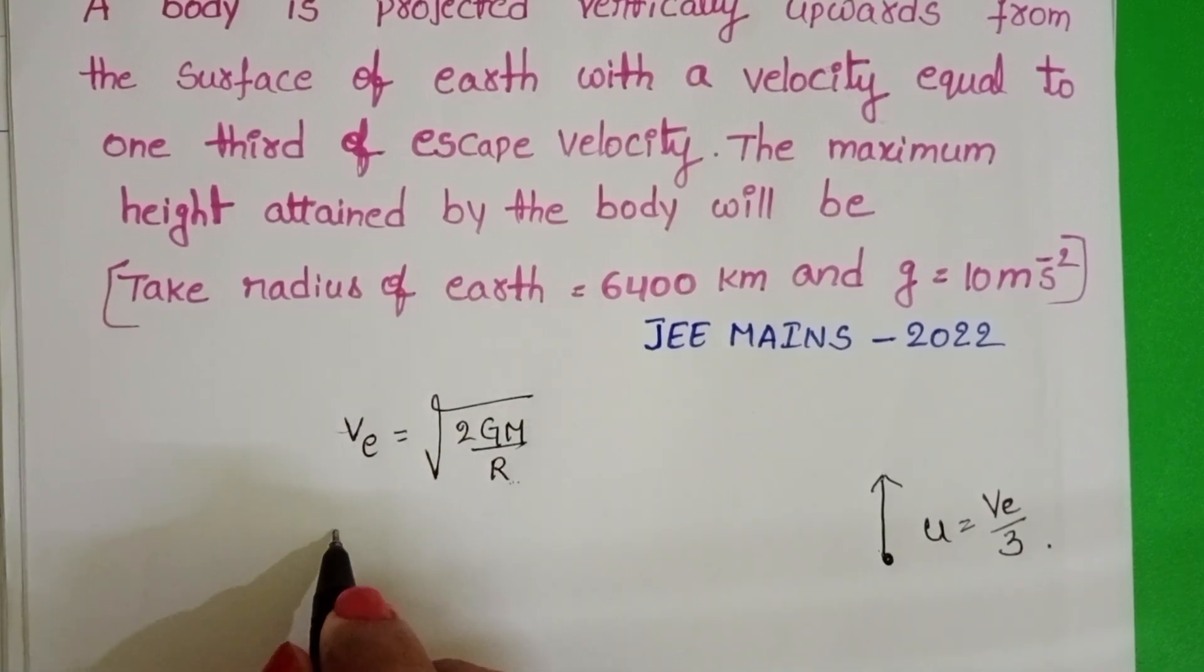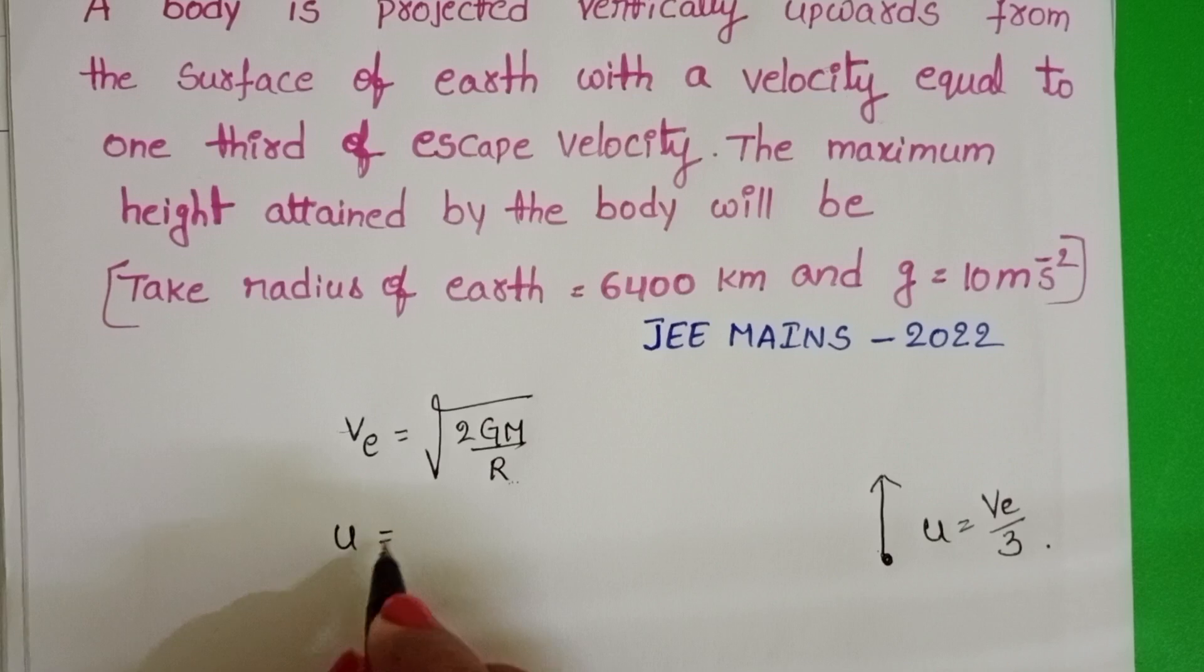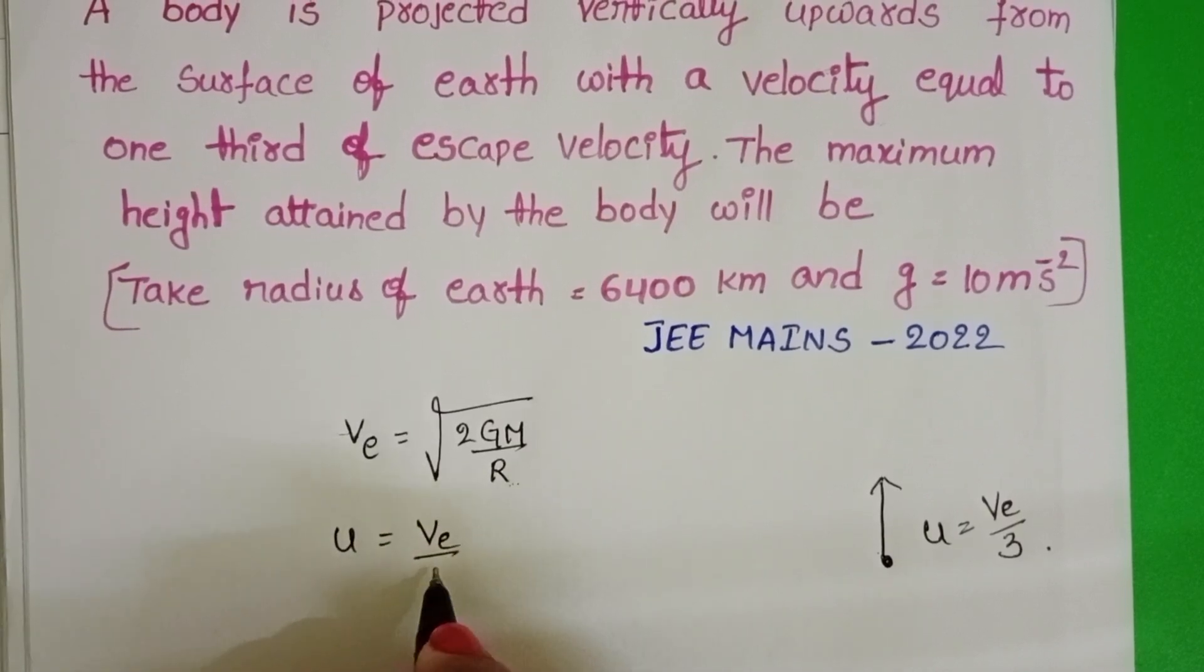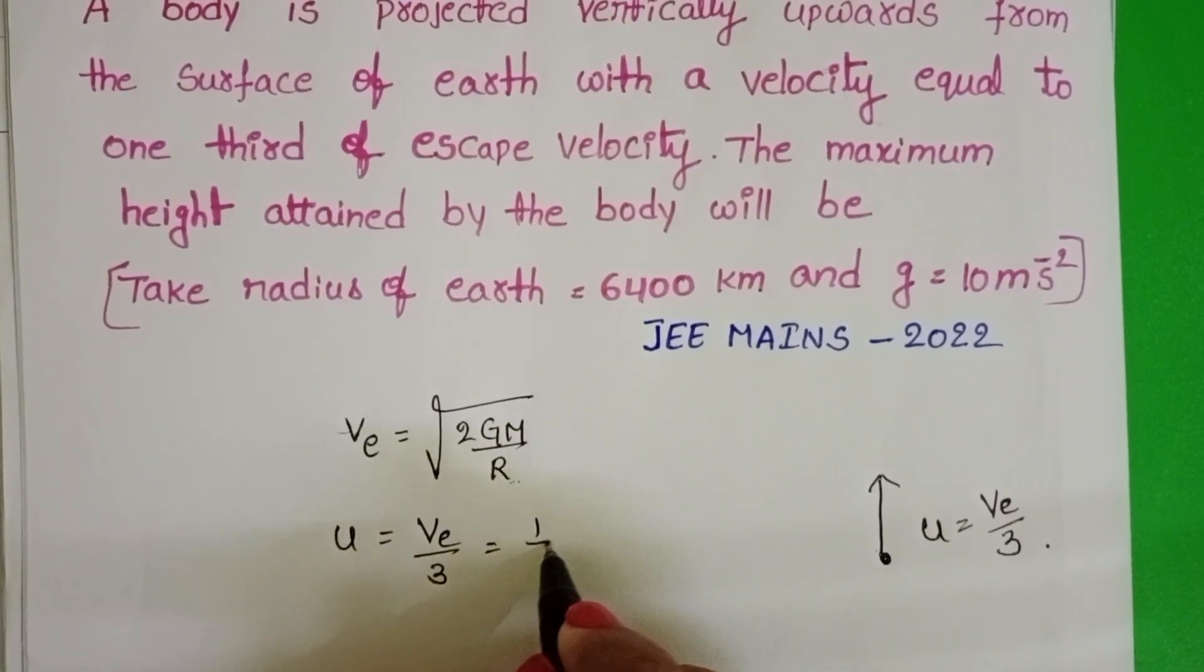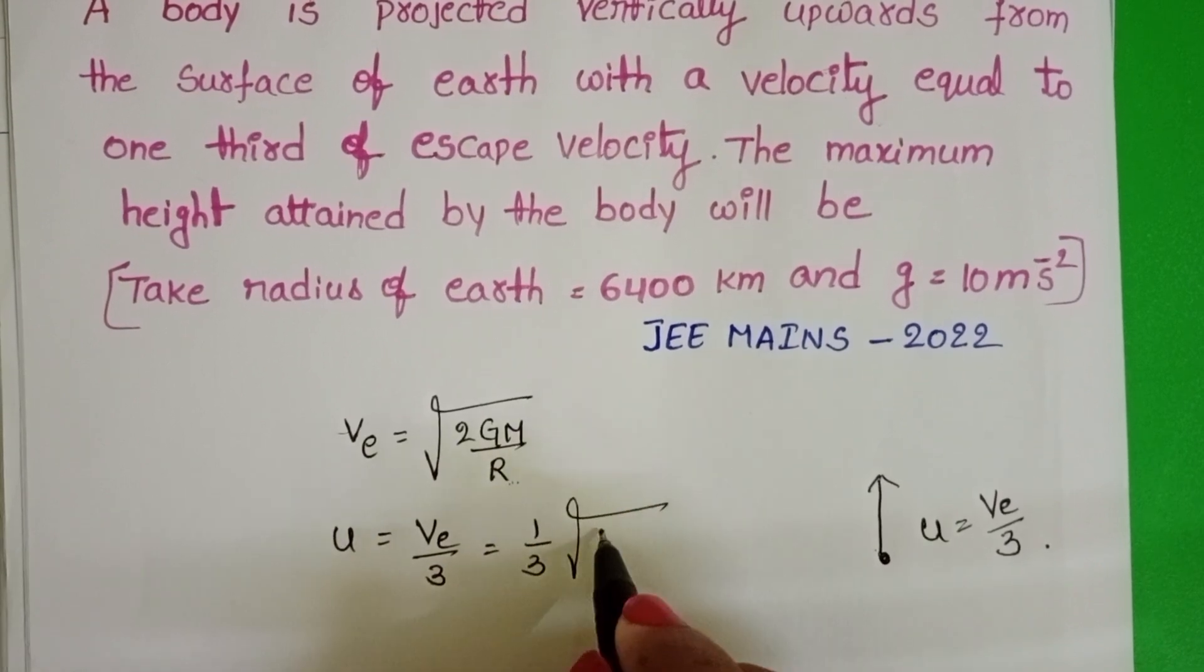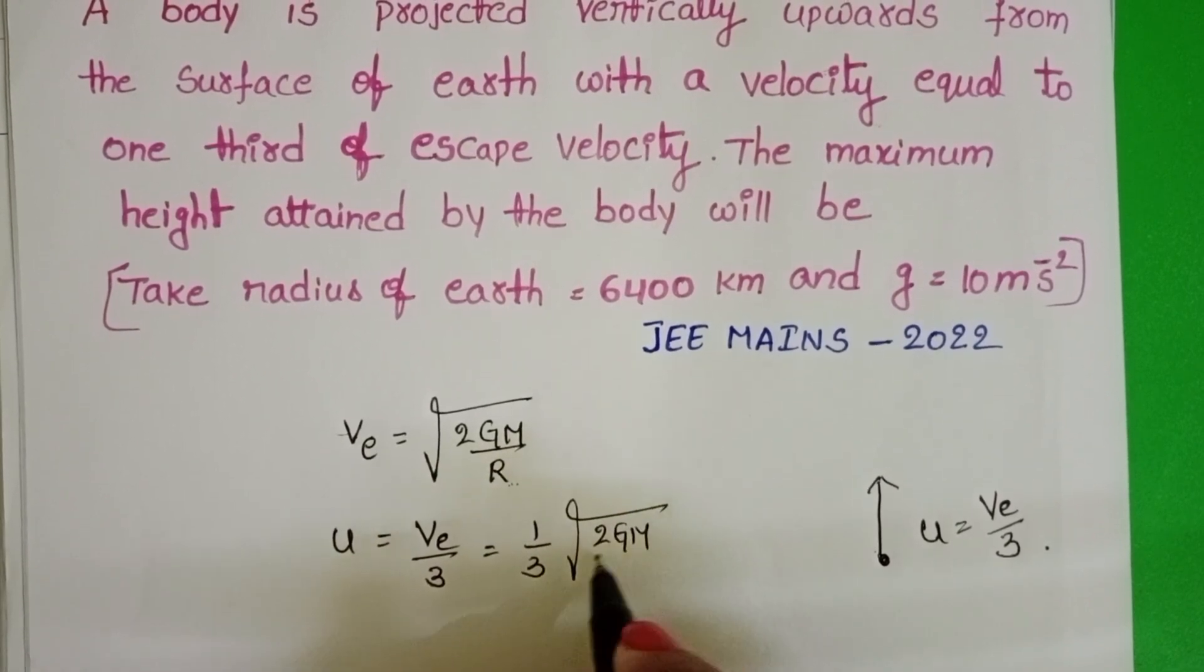Here initial velocity of upward projected body is one third of the escape velocity: u equals one third times square root of 2GM by R.